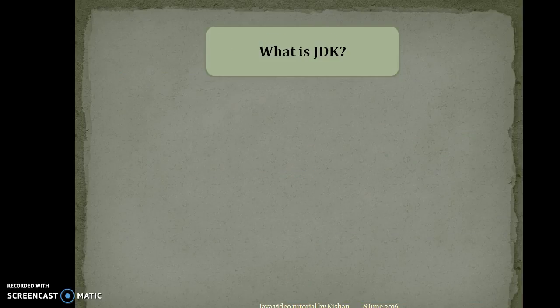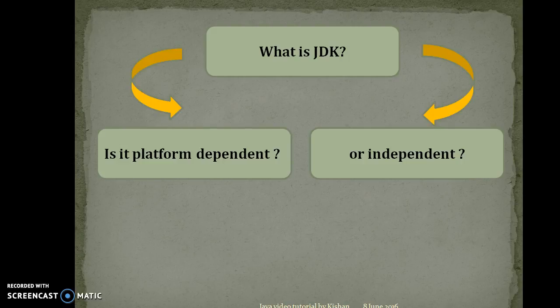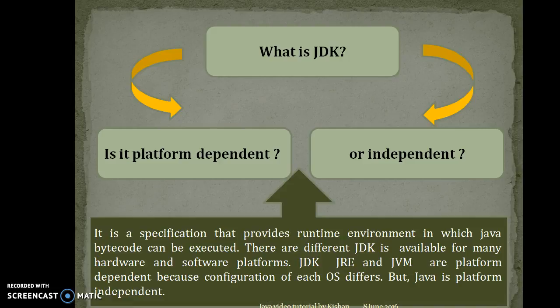Next, let's discuss what is JDK. JDK stands for Java Development Kit. JDK is a specification that provides a runtime environment in which Java bytecode can be executed. There are different JDKs available for many hardware and software platforms. JDK, JRE, and JVM are platform dependent because the configuration of each OS differs, but Java itself is platform independent — also called 'write once, run anywhere'.